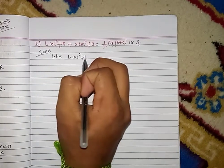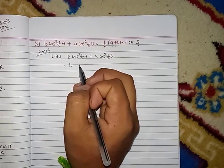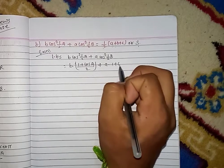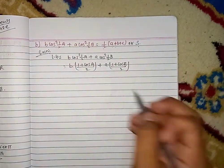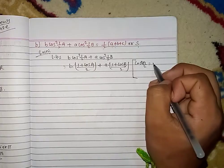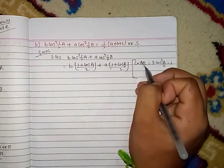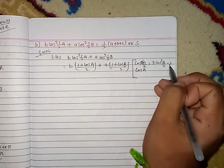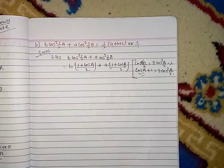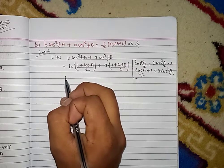b·cos²(A/2) plus a·cos²(B/2) — and then the next step uses the formula: (1 + cos A)/2 plus a·(1 + cos B)/2. And cos 2A = 2·cos²(A/2) − 1, so 2·cos²(A/2) = 1 + cos A.